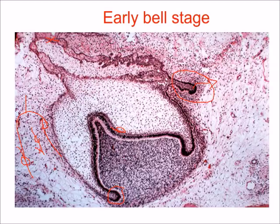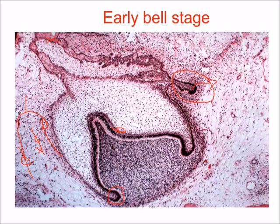The stratum intermedium is a new layer appearing between the inner enamel epithelium and the stellate reticulum. It consists of flat cells rich with alkaline phosphatase activity. These cells assist the inner enamel epithelium in the formation of enamel and mineralization, and they control fluid diffusion into and out of the ameloblasts.